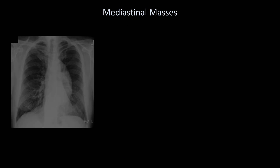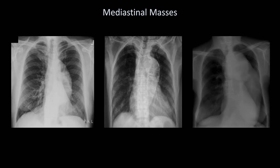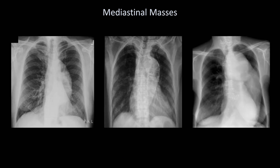Here is an interesting collection of mediastinal masses which are critical to accurately identify — these are all aortic aneurysms. The one in the middle is particularly easy to identify given the calcified walls, since only vascular structures or cysts tend to do that.